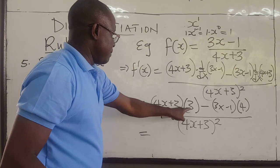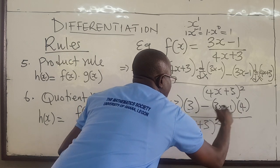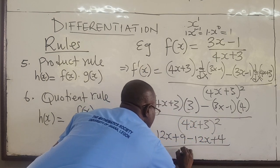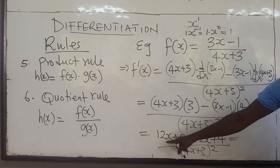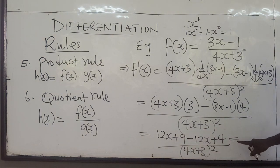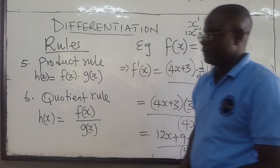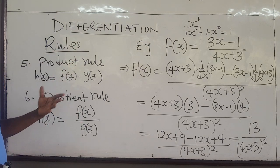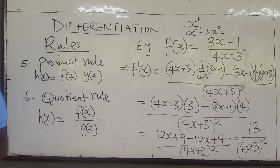Multiplying out: 4x plus 3 times 3 gives 12x plus 9, and 3x minus 1 times 4 gives 12x minus 4. So the numerator is 12x plus 9 minus 12x plus 4. The 12x terms cancel, and 9 plus 4 gives 13. So f'(x) equals 13 over (4x plus 3) squared. That is how you apply the product and the quotient rules. We'll look at more examples and some special derivatives later.